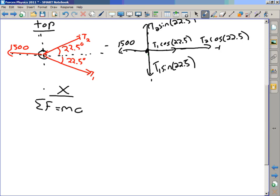So I have T1 cosine 22.5 plus T2 cosine 22.5. And remember, I said don't worry about the negatives with that angle. Drop the negatives. Okay? Deal with direction manually. Deal with directions manually yourself, which is what we're doing here.